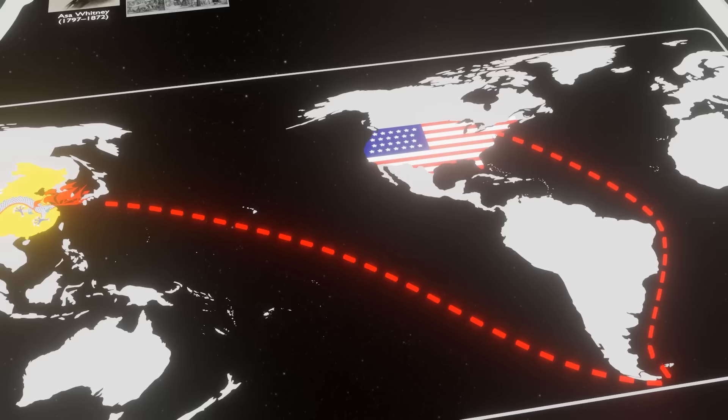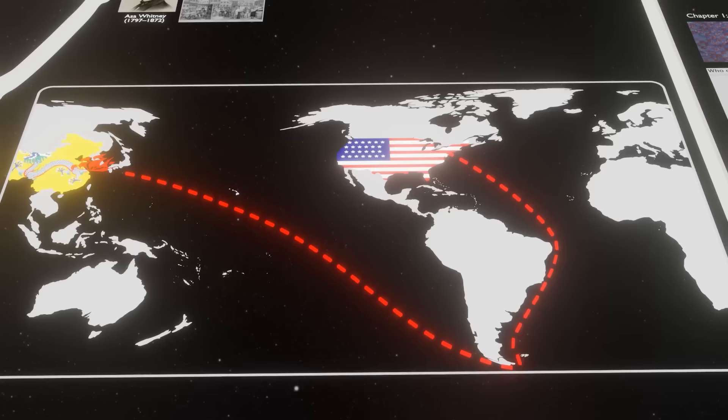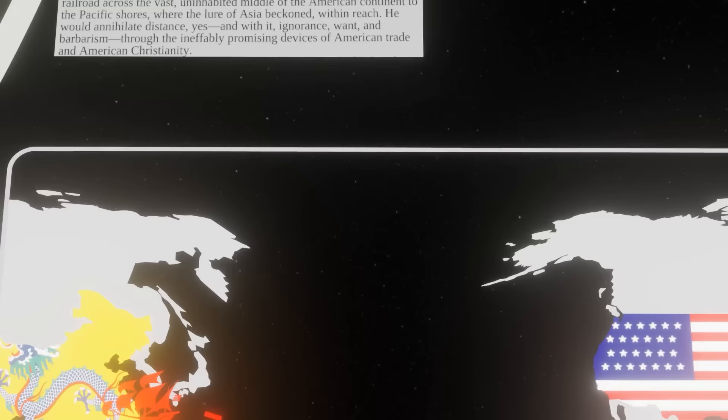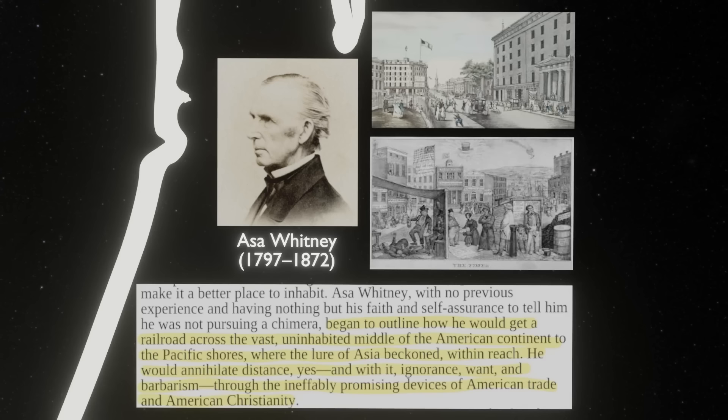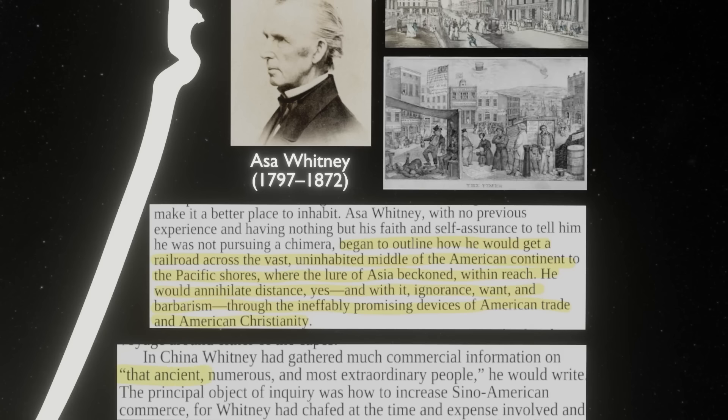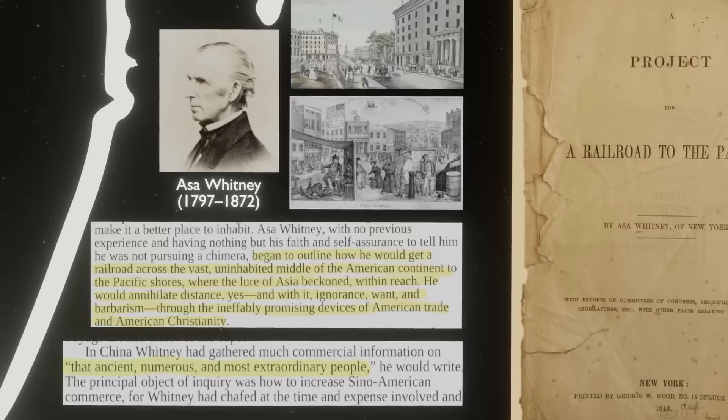Whitney arrived in China during the Opium Wars and did pretty well there. Through his business ventures, he had enough money to retire. But instead he went back to New York, declaring that China was great for business and they had to go back. He was genuinely crazy about China — in one of his writings, he calls the Chinese 'those ancient, numerous, and most extraordinary people.'